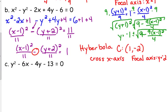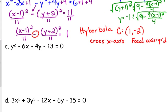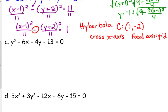Let's look at example C. y squared minus 6x minus 4y minus 13 is equal to 0. So right off the bat, which one is this? Parabola? Parabola. Because only the y is squared. Okay, only y is squared. So parabolas are the only ones that have either x or y being squared, not both.